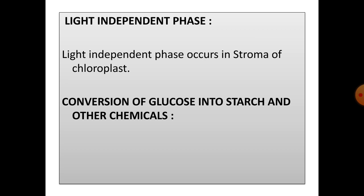Conversion of glucose into starch and other chemicals. Most green plants convert glucose into starch as soon as it is formed. Several glucose molecules are transformed to produce one molecule of starch, and this process is called polymerization.